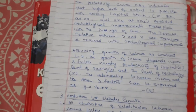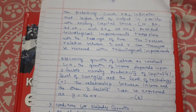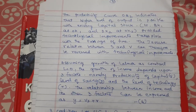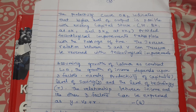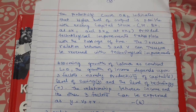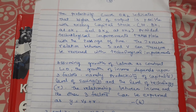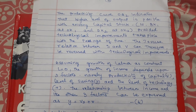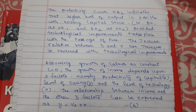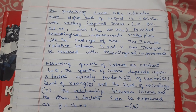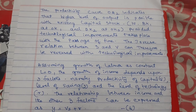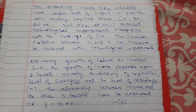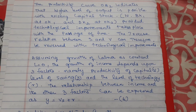Assuming the growth of labour as constant (L = 0), the growth of income depends upon three factors: productivity of capital V, level of savings S, and level of technology R. The relationship can be expressed as Y = VS + R (Equation 6). James Meade gave three conditions for steady growth.